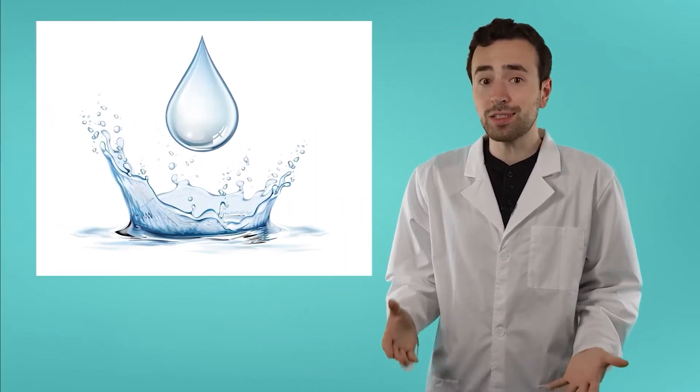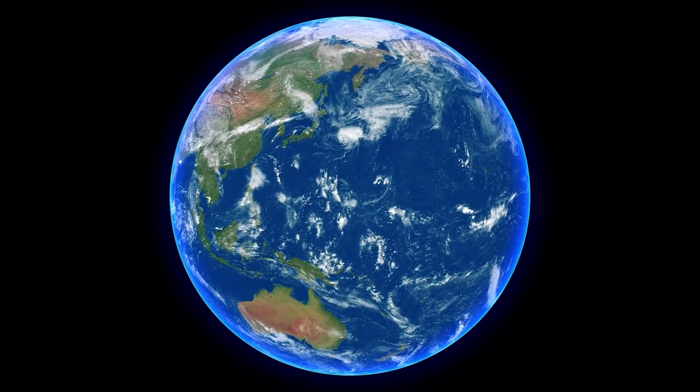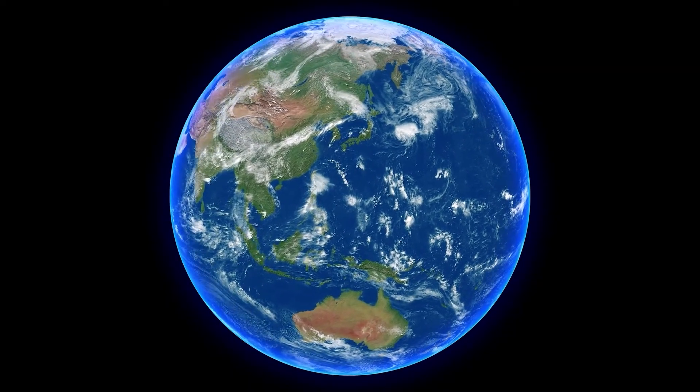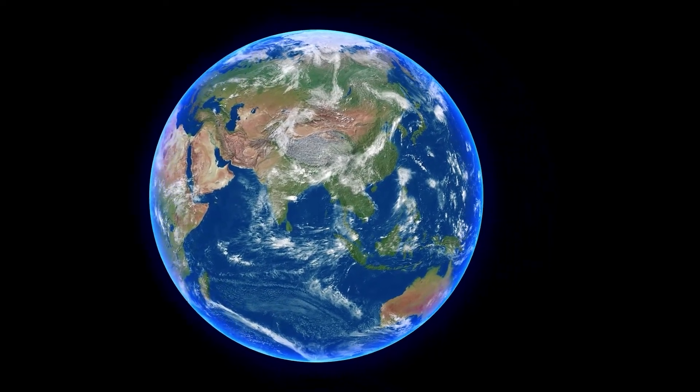Using resources faster than they're replenished leads to serious consequences, as we can see with deforestation and overfishing, but even the resources that naturally cycle, like water, need to be used responsibly. It may seem strange to think we need to conserve water when it covers more than two-thirds of the planet, but here's a shocking fact.